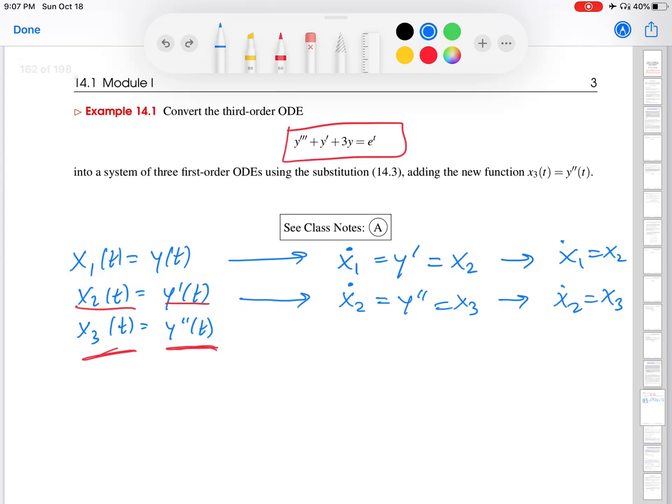But this last one is going to be different, because when I differentiate x3, I get over here, y triple prime. I have no x4, so I can't write this as equals x4. I can't do that. I have no x4. That's one of the reasons I wanted to make sure that we went over how many x's you have, and how that corresponds to the order of the ODE.